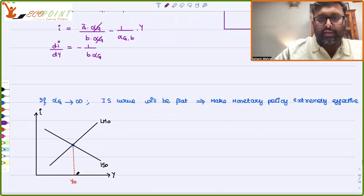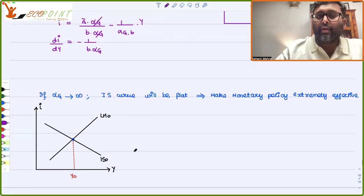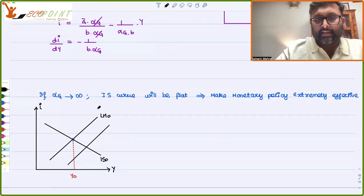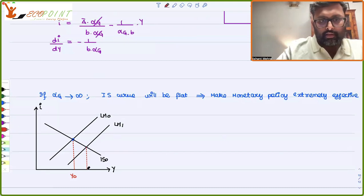Now what we'll be doing is this, we have our IS equation, supposedly monetary money supply has increased. So if money supply increases, you move from LM0 to LM1. And the output which is going to increase is this thing, let's say Y1.